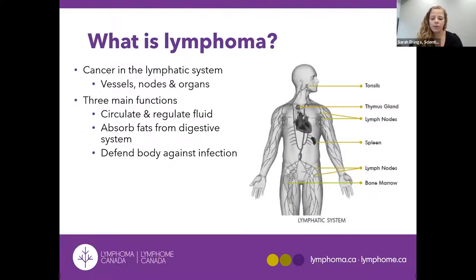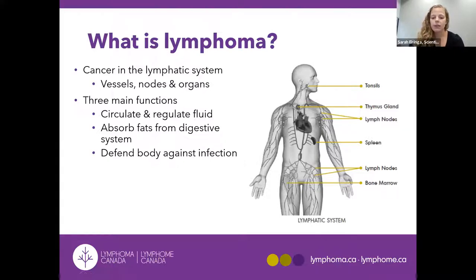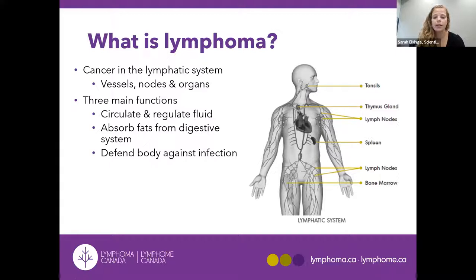Lymphoma is cancer of the lymphatic system, and the lymphatic system is a system of vessels, nodes, and organs that are found all throughout your body. This includes your tonsils, your thymus, your lymph nodes, your spleen, and bone marrow. There are three main functions of the lymphatic system: to circulate and regulate fluid, to absorb fats in the digestive system, and to defend the body against infection, which is overall very important for your immunity and overall health.